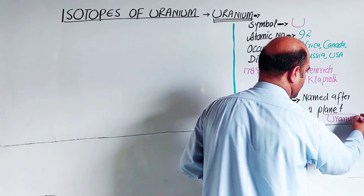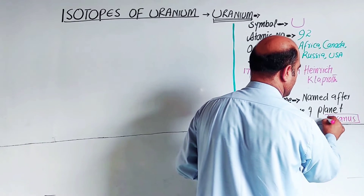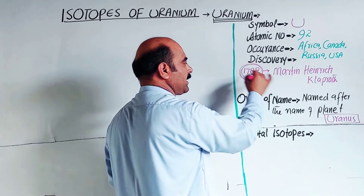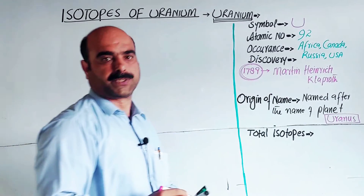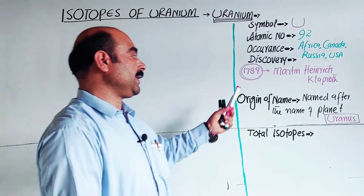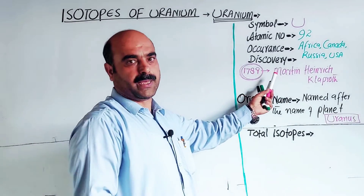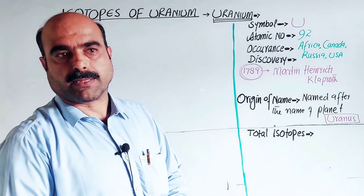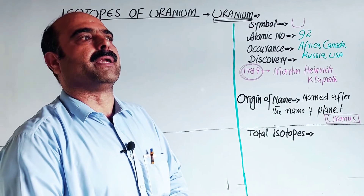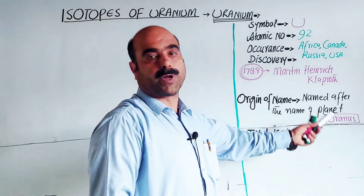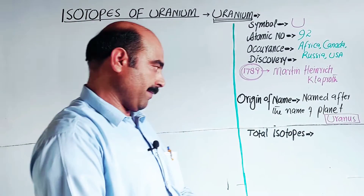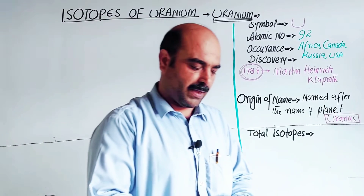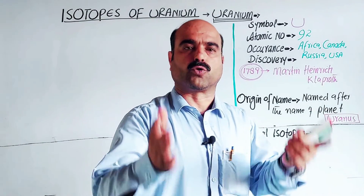The planet Uranus had been discovered around 10 years earlier. In 1789, when the element was discovered, Martin Heinrich Klaproth named it uranium after the planet Uranus. So uranium was named after the planet Uranus.